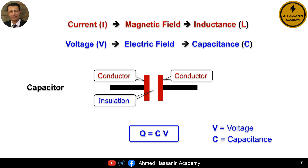We understand from this that the amount of stored charge Q is directly proportional to the voltage difference V. This means that if the voltage difference increases, the amount of electric charges stored in the insulating medium will also increase.